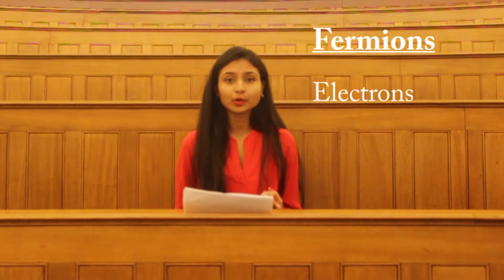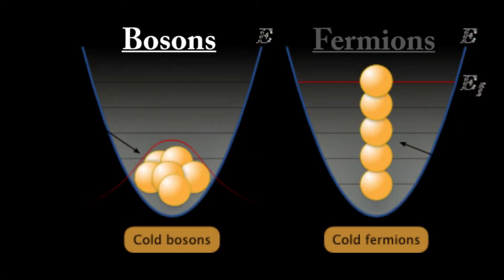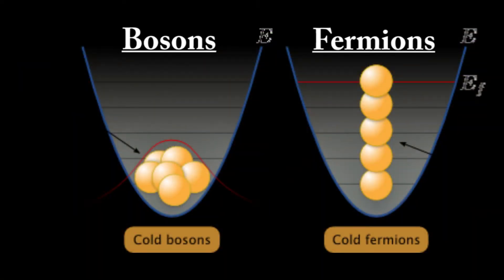Bosons are particles with integer spins that obey Bose-Einstein statistics. Unlike fermions, such as electrons, which have to obey the Pauli exclusion principle, bosons with the same energy can occupy the same energy level. This state of matter is known as a Bose-Einstein condensate.